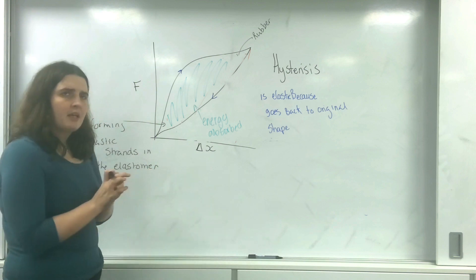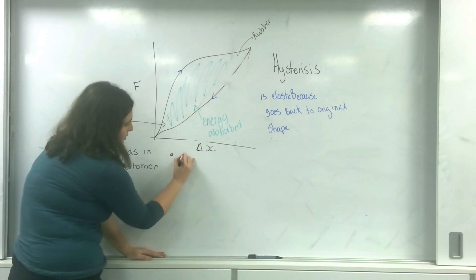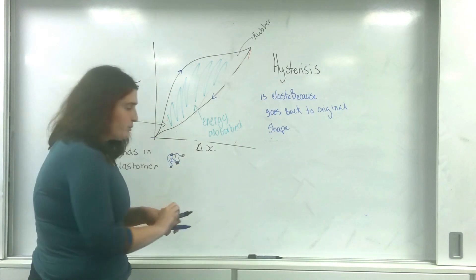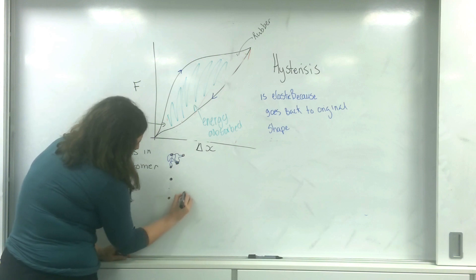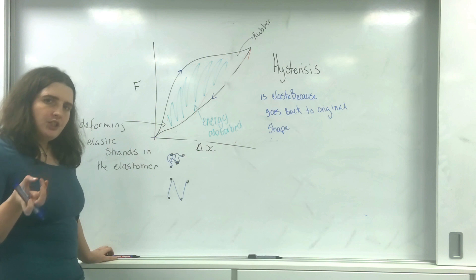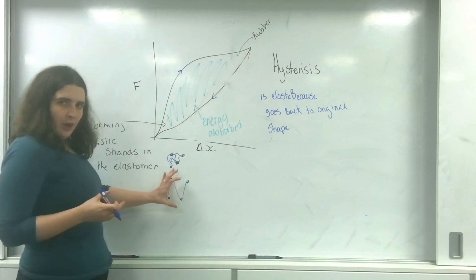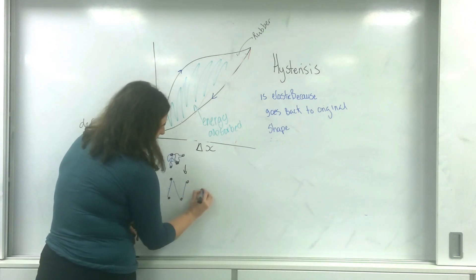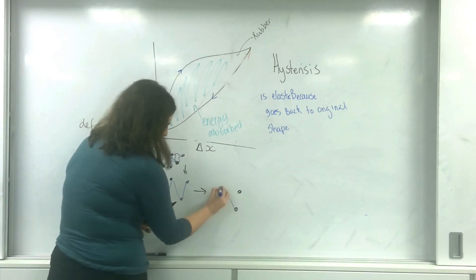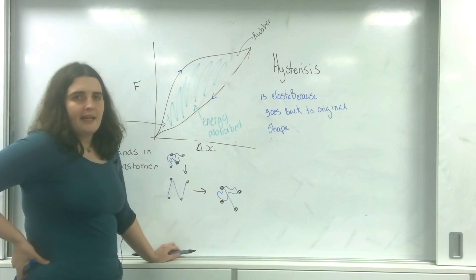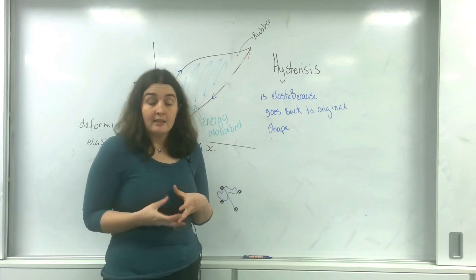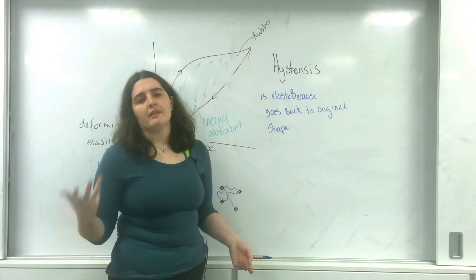If you can imagine that an elastomer has molecules all connected by squiggly lines, when you stretch them out they go into nice rigid lines. Some of the energy that's absorbed stays there, which means when we go back, some of them may stay permanently deformed. Those are the hard parts in an elastic band — areas that are permanently deformed — and eventually that will cause material failure and it will snap.